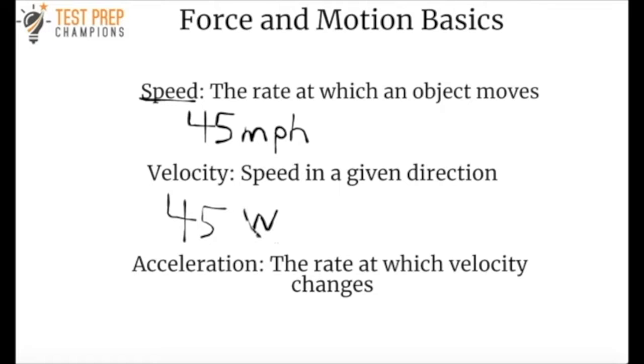Velocity is defined as speed in a given direction. So if we say 45 miles per hour, that's an example of speed. But if we say 45 miles per hour going west, north, south, or whatever the direction happens to be, that's an example of velocity.